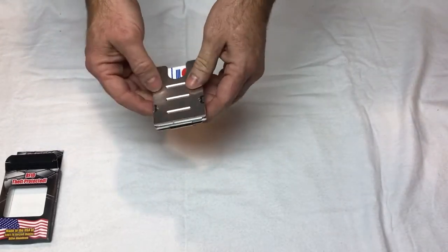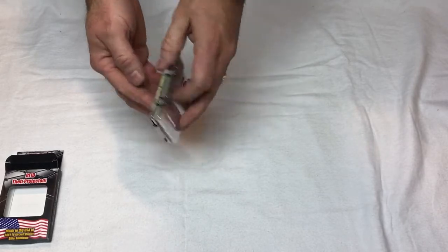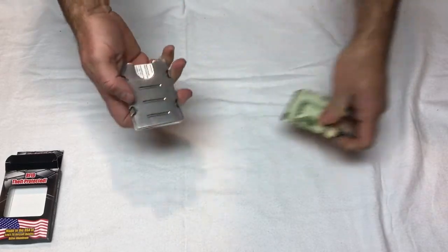There you go. You have a minimalist aluminum wallet. It can go in the front pocket or back. You can use it with or without the money clip.